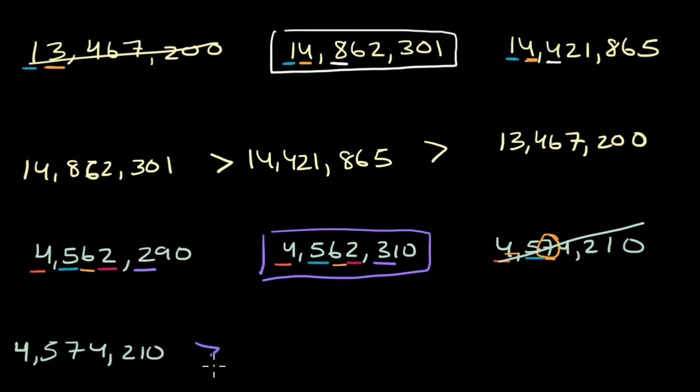So we have our next number is going to be 4,562,310, which in turn is also greater than the smallest number, which is 4,562,290. And there we have it. This number is greater than this number, which is greater than that number. We have ordered from greatest to least.